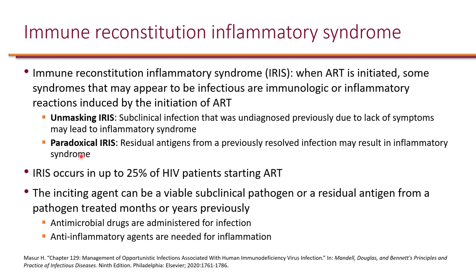Paradoxical IRIS occurs when someone previously had an infection that is no longer active, but residual antigens from that resolved infection are still circulating. Once ART is started and CD4 counts rise, the body mounts a response. This is important to keep in mind: when treating opportunistic infections and starting ART simultaneously, if the patient initially appears to worsen, that's typically IRIS and usually not a cause for concern.